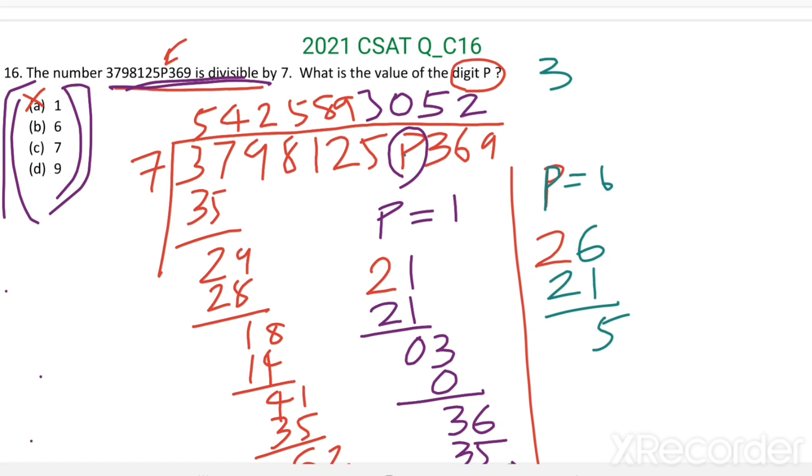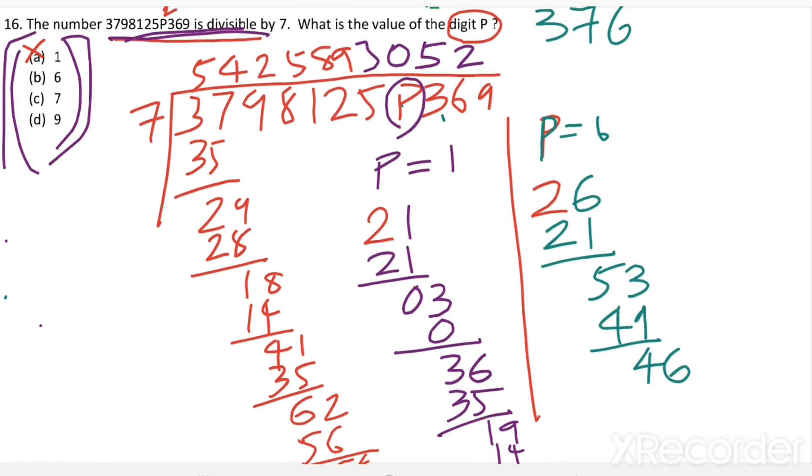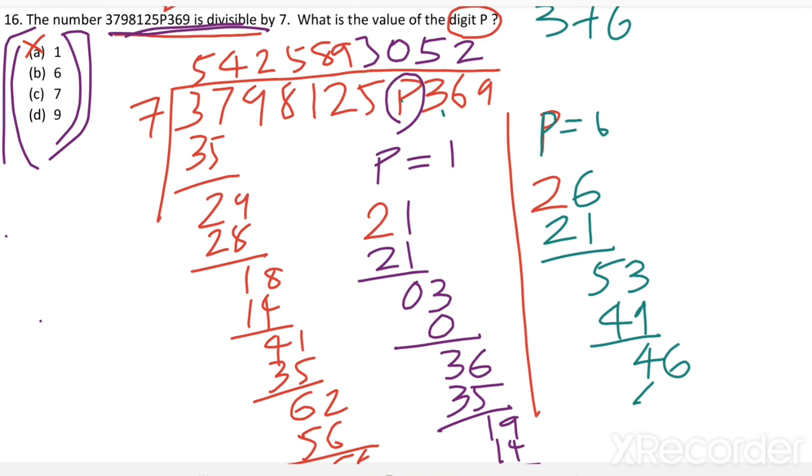Then taking this 3. In 53, how many 7s are there? 7. 7 7s are 49. Then I am taking this 6 here. In 46, how many 7s are there? 7. 7 7s are 49.